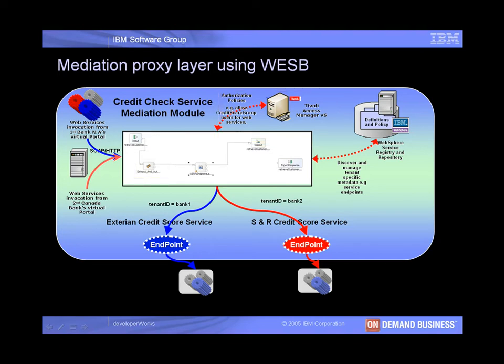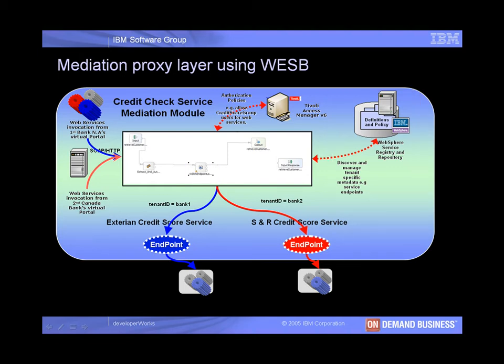In the same flow, he adds another mediation primitive which fetches the tenant's service endpoint metadata for the credit check service from WebSphere Services Registry and Repository, if the user is successfully authorized. Storing the endpoint information in WSRR allows Sam to make changes at runtime and add new tenants without impacting existing tenants.